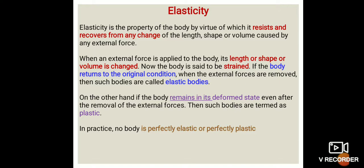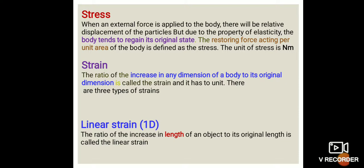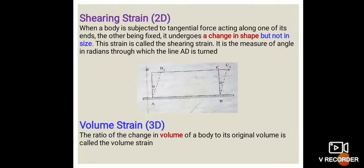The original state is the elastic material and the deformed state represents plastic material — that is the physics concept of stress and strain. We apply force to the material and the restoring force brings it back. For strain: one-dimensional is linear strain (length), two-dimensional is shearing strain (angle, theta), and three-dimensional is volume strain (volume). These are the three types of strain.